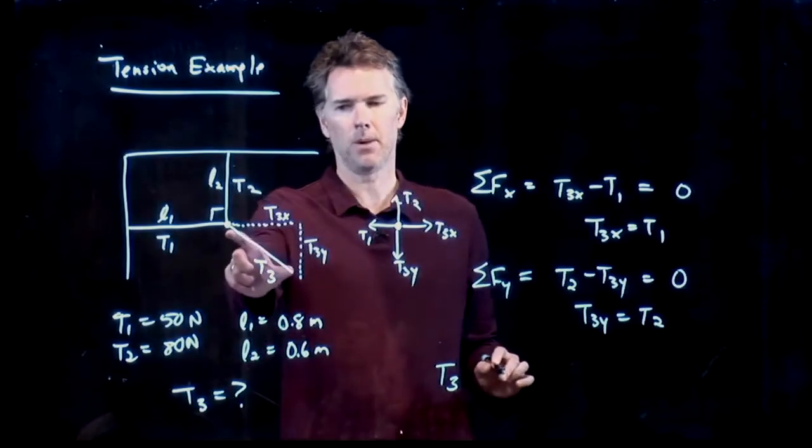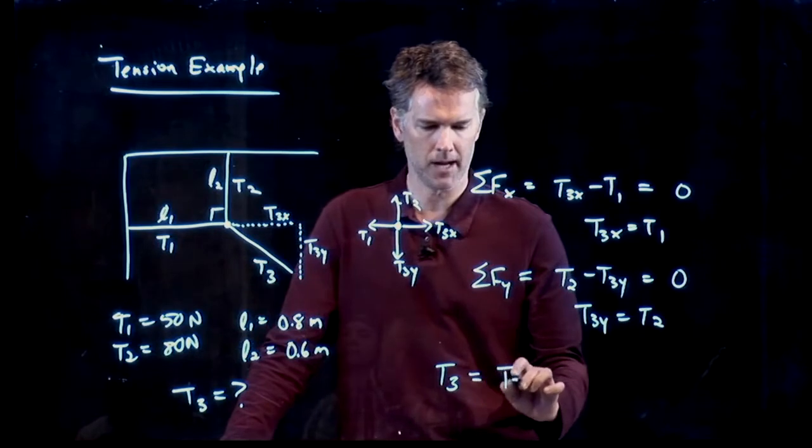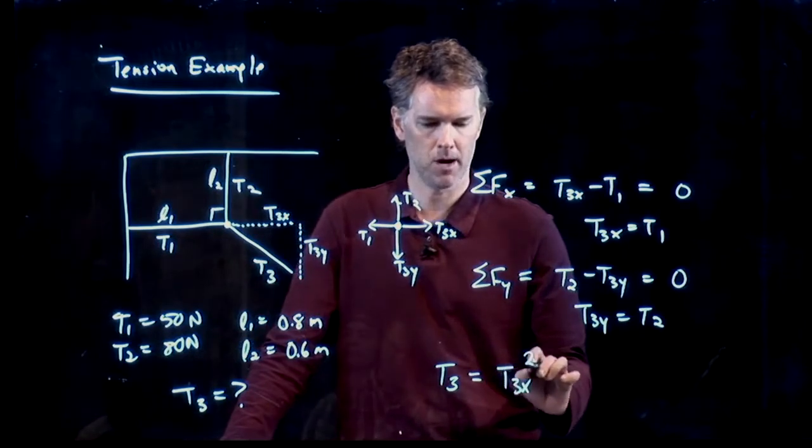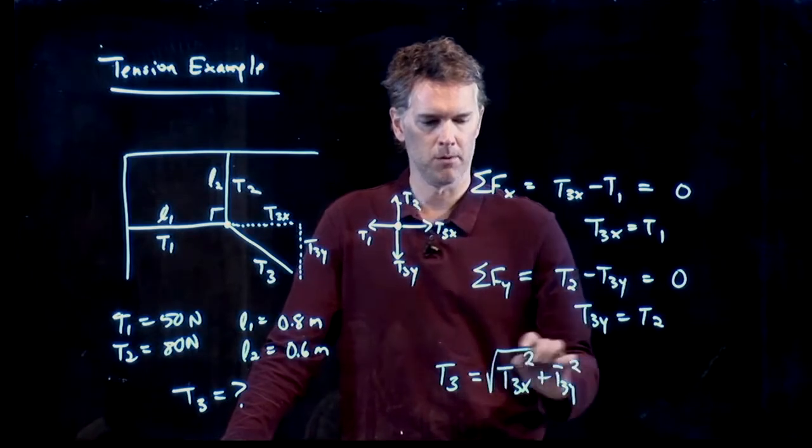t3 is the hypotenuse of this triangle. So Pythagoras tells us we got to add up the x component squared, the y component squared, take the square root.